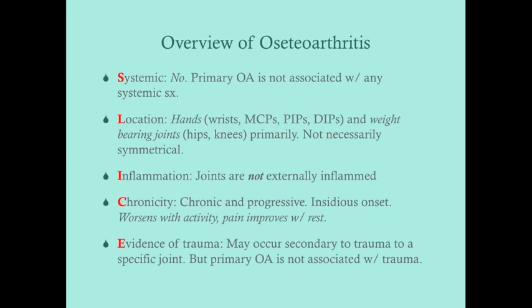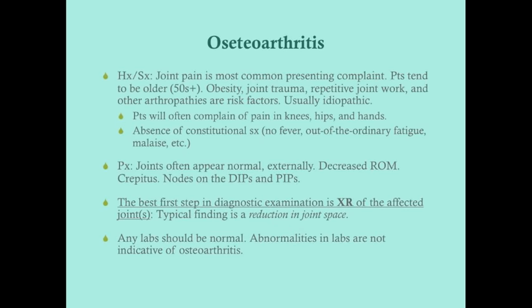Osteoarthritis can occur secondary to acute or chronic trauma to a specific joint, but primary osteoarthritis is not associated with any particular trauma. Patients with osteoarthritis primarily complain of joint pain — hand pain, wrist pain, knee pain. These patients tend to be older, almost always 50 or above. Risk factors include obesity, joint trauma, repetitive joint work, and other arthropathies for secondary OA, while simply being old is the main risk factor for primary OA. Patients commonly complain of pain in the knees, hands, and hips.